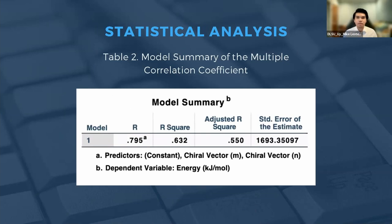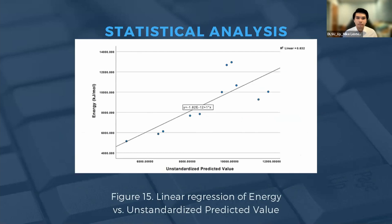For our statistical analysis, Table 2 shows the model summary of the multiple correlation coefficient done through IBM SPSS. This shows the correlation between our independent variables — the chiral vector pairs — and the dependent variable, the chemical potential energy output. We obtained an R-square value of 0.632, indicating a small positive correlation. Figure 15 shows a scatter plot with linear regression plotting energy output against the unstandardized predicted value, which accounts for chiral vector pair N and M. The R-square value of 0.632 is consistent with Table 2.